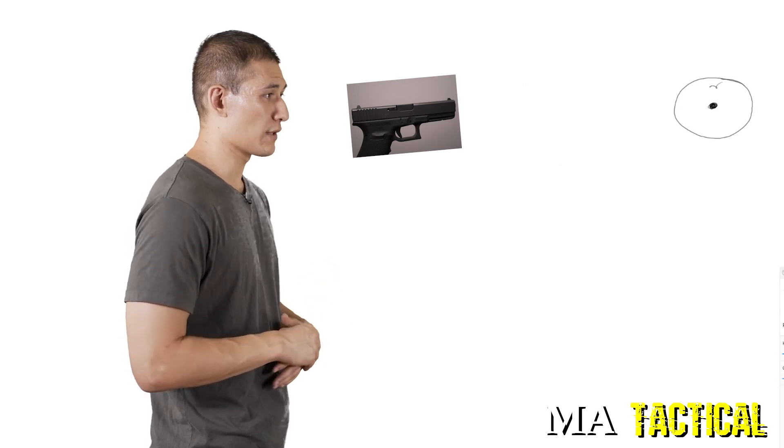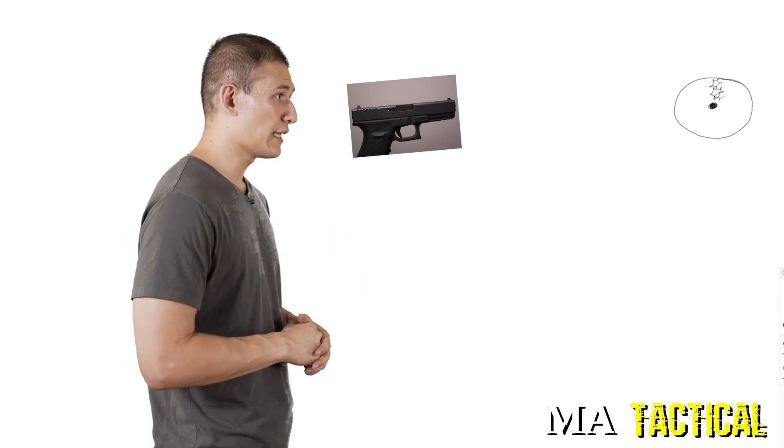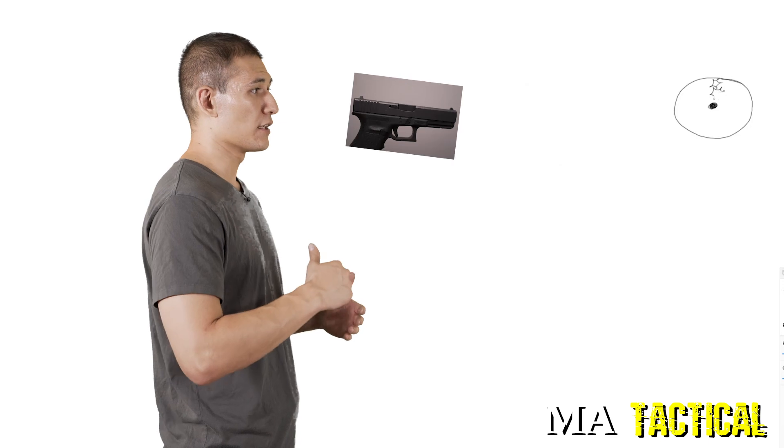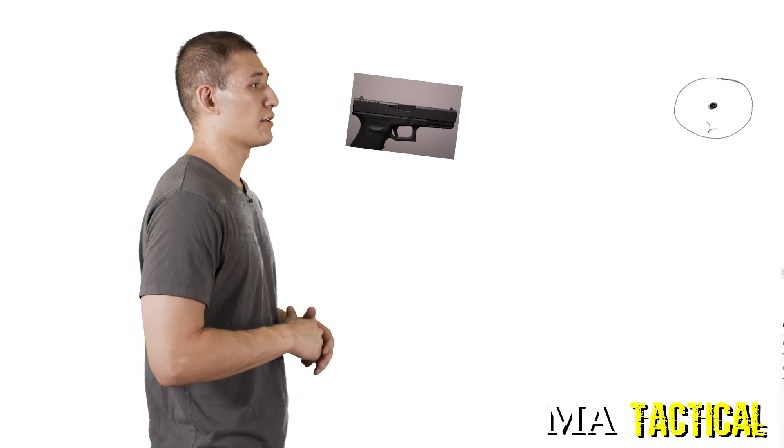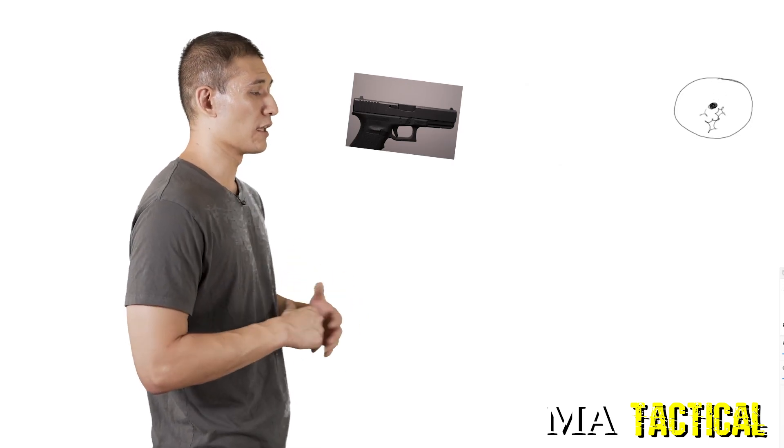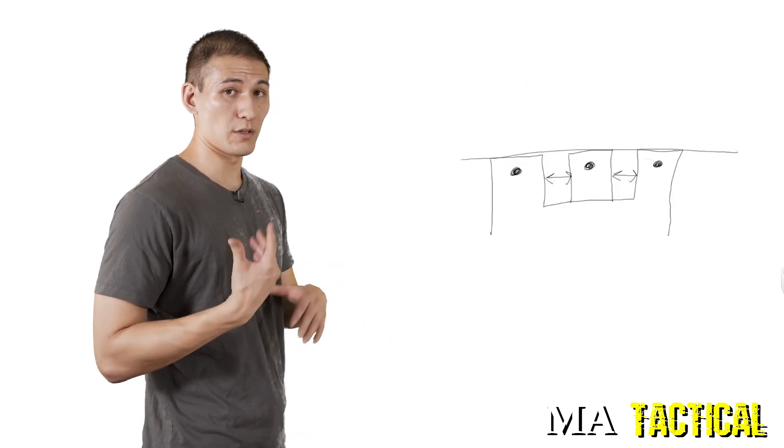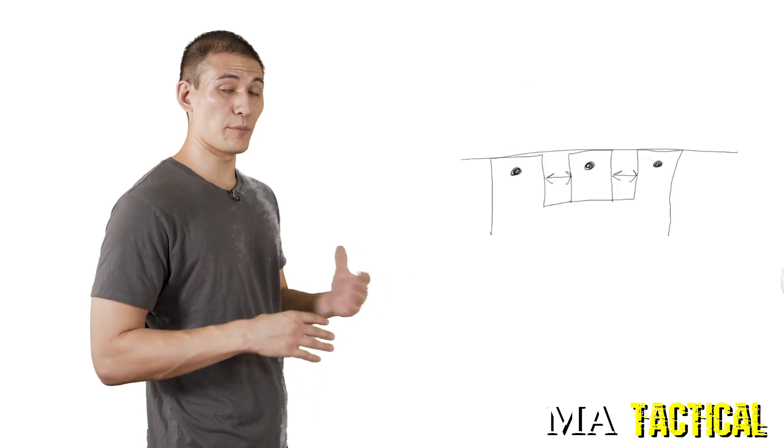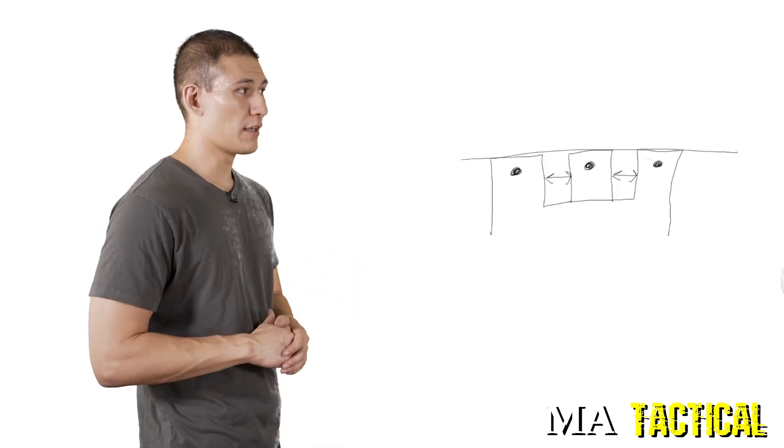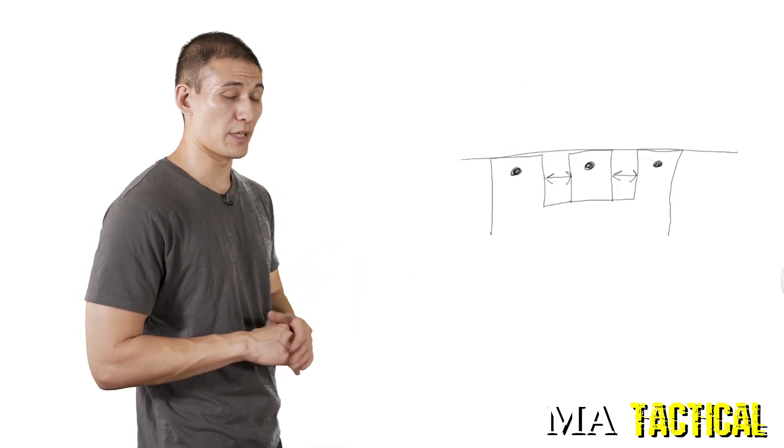Same thing goes vertically. If you have your front sight post above the rear sight, your rounds are going to impact higher on your target. And if the front sight post is lower than the rear sight, rounds will impact lower on the target. So hopefully this little drawing helps you understand how your sights need to look, and if your rounds are impacting not where you want them to be, then it might have to do with your sight alignment amongst other things.